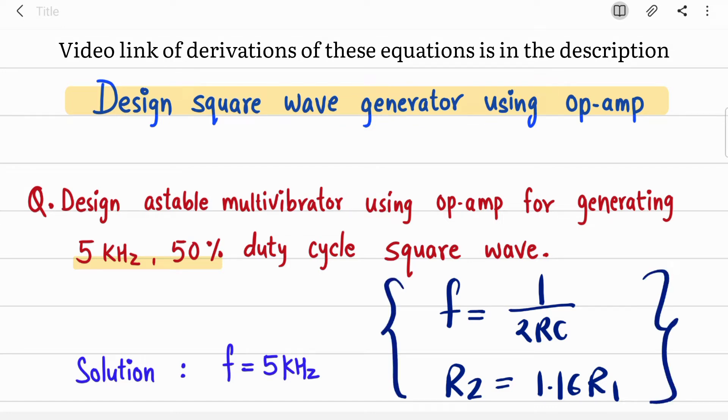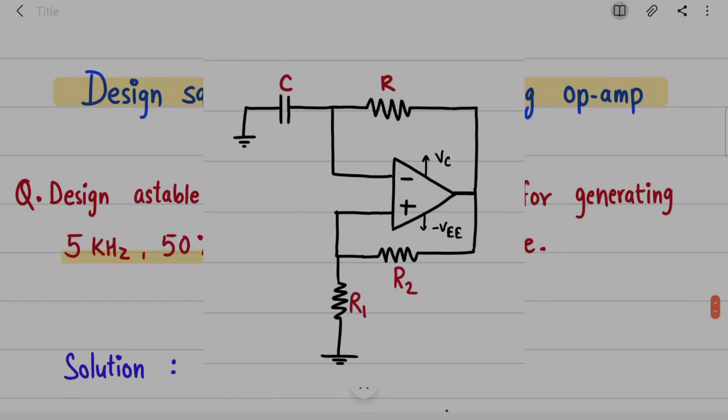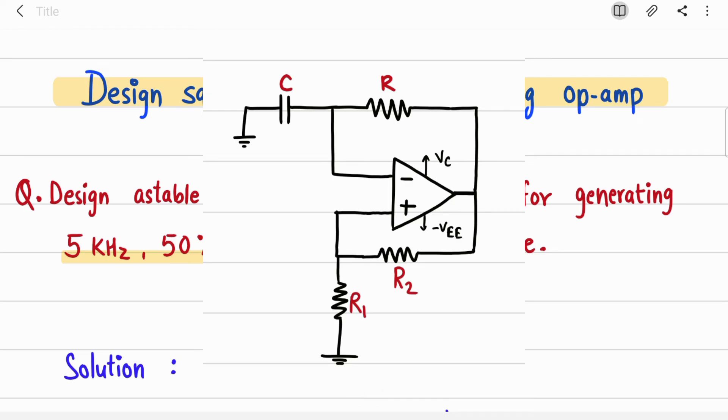Now let's solve the numerical. The question is: design a stable multivibrator using op-amp for generating 5 kHz, 50% duty cycle square wave. Designing is nothing but calculating all the components present in that circuit - R, C, R1, R2. You just need to calculate their values.